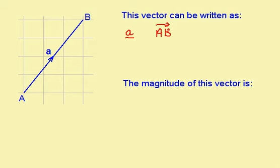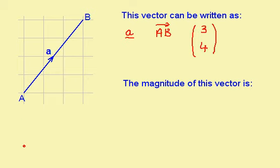It can also be written as a column vector. The column vector for this one is 3, 4, written like this: 3, 4. These numbers are positive because I went to the right and up. If I go to the left, the top number needs to be negative. If I go down, the bottom number needs to be negative.